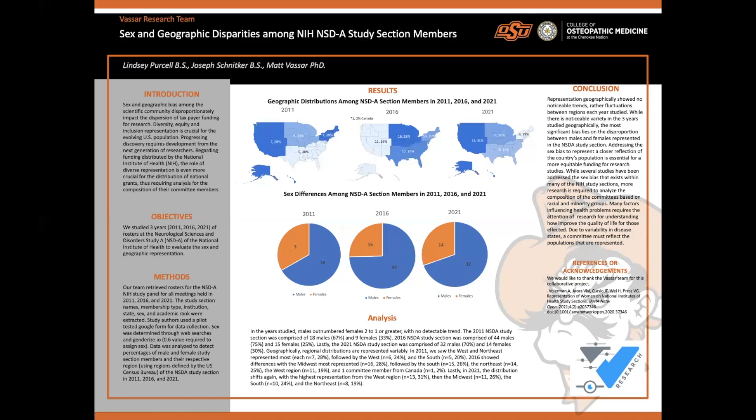In the results section, our geographical distribution is represented by the heat maps at the top, and they are rather varied. In 2011, we saw that the West and the Northeast both were represented most at 28%, followed by the West at 24%, and the South at 20%. 2016 showed differences with the Midwest most represented at 28%, followed by the South at 26%, the Northeast at 25%, and the West at 19%. One thing to note in 2016 was that one committee member was also from Canada and accounted for 2%.